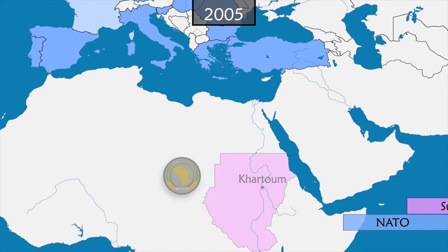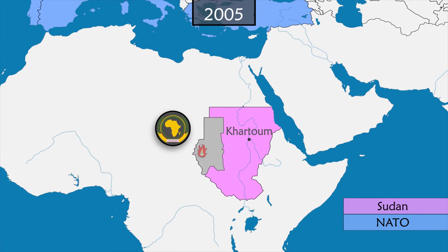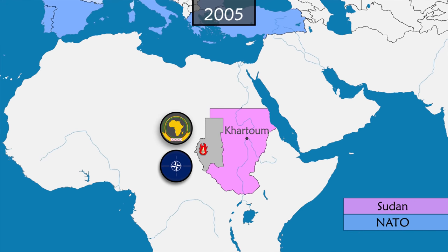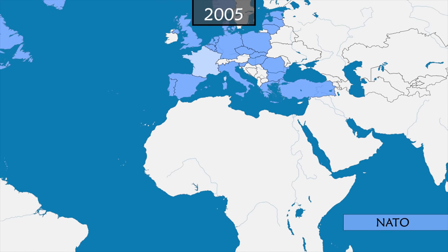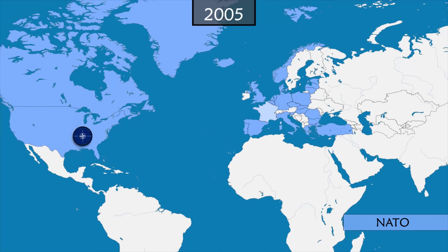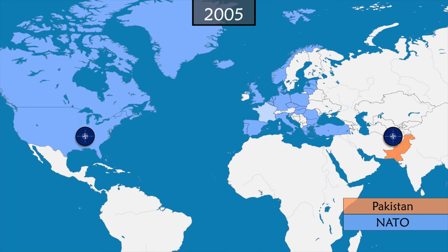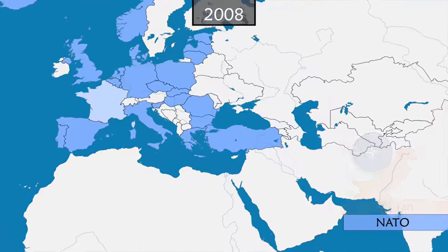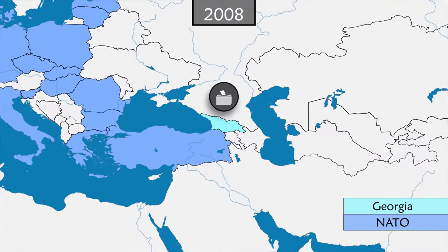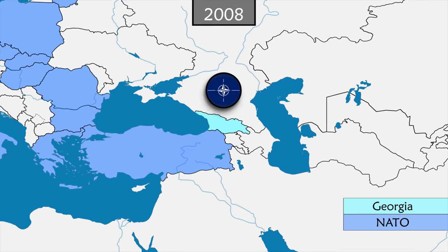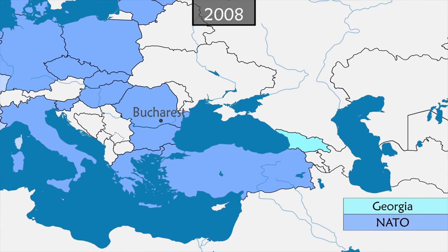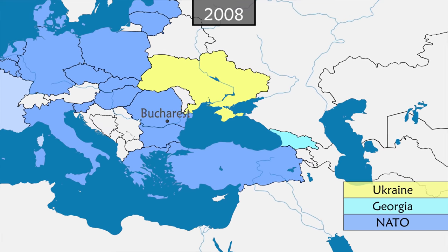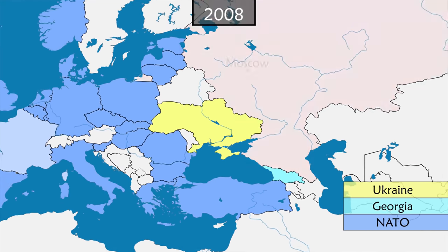In 2005, the African Union, intervening in Darfur where war is raging, asks NATO for support and obtains logistical and air transport assistance. The same year, NATO sends humanitarian aid to the United States after Hurricane Katrina and to northern Pakistan after a devastating earthquake that leaves 4 million people homeless. In 2008 in Georgia, 77% of the population announces they are in favor of joining NATO.